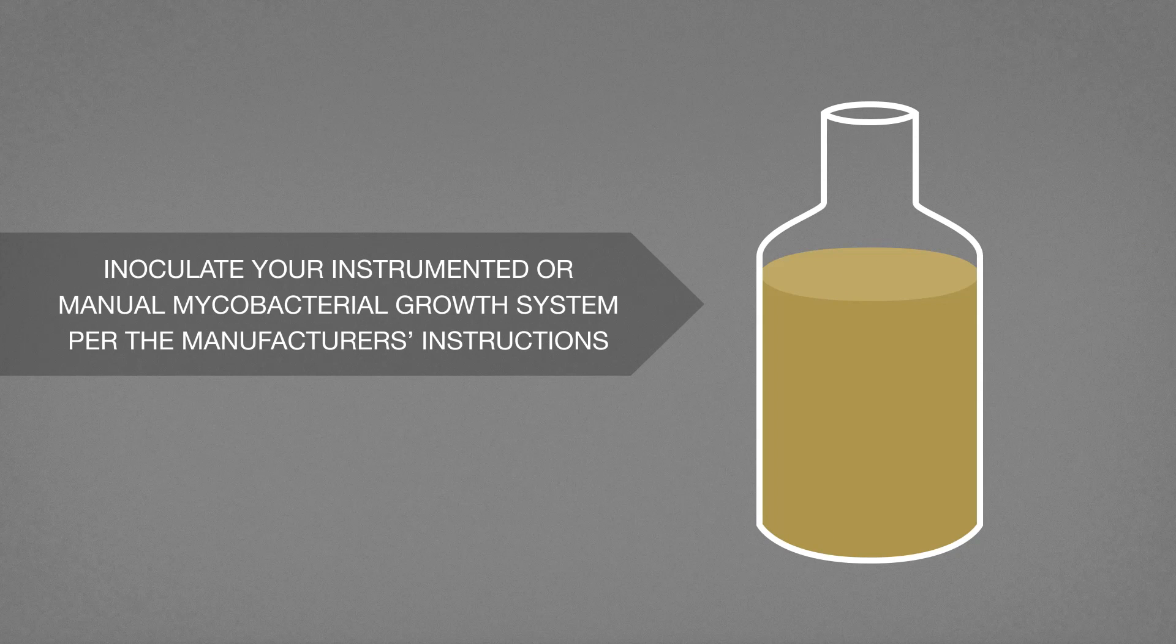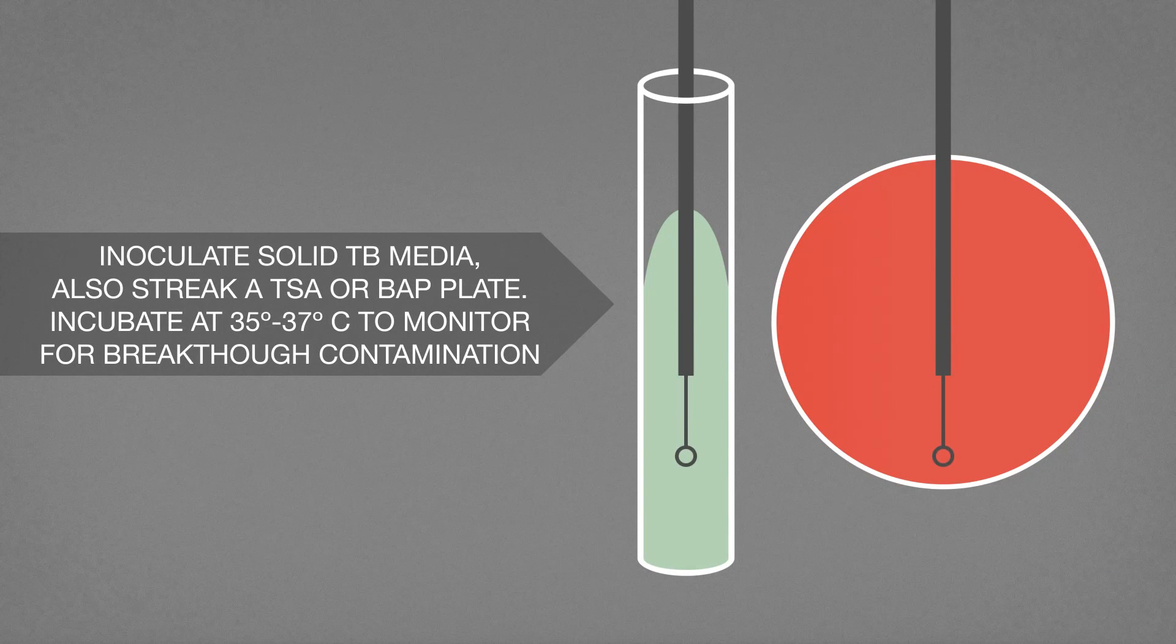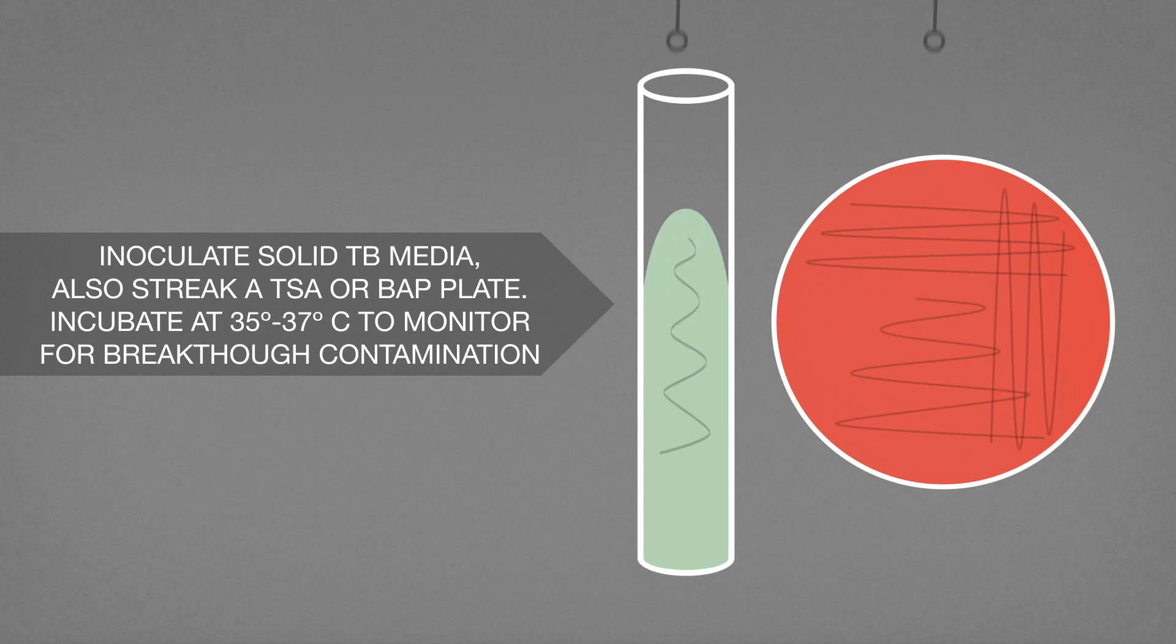Inoculate your instrumented or manual mycobacterial growth system per the manufacturer's instructions. Inoculate solid TB media. Also streak a tryptic soy agar or blood agar plate and incubate at 35 to 37 degrees Celsius to monitor for breakthrough contamination.